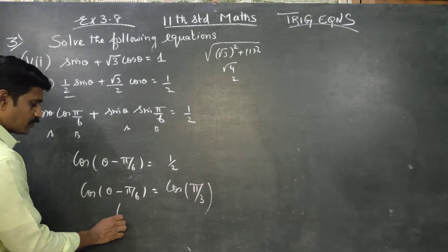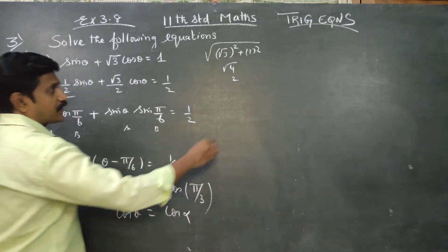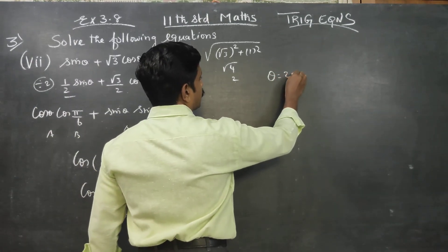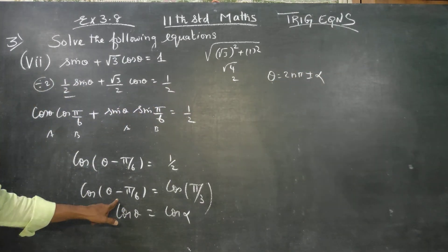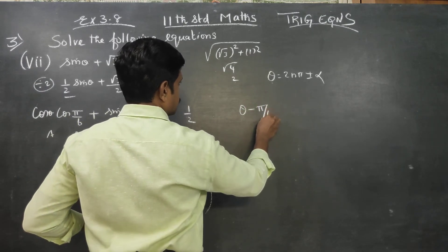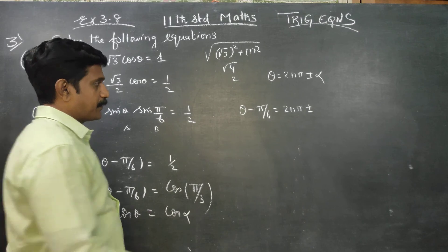Cos theta equals cos alpha. Therefore, theta equals the formula: 2n pi plus or minus alpha. Theta minus pi by 6 equals 2n pi plus or minus pi by 3.